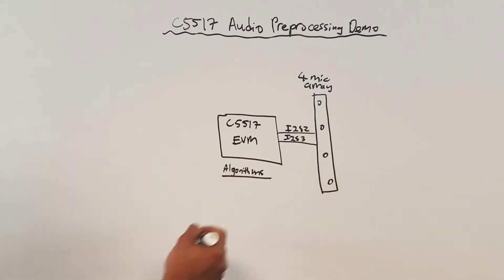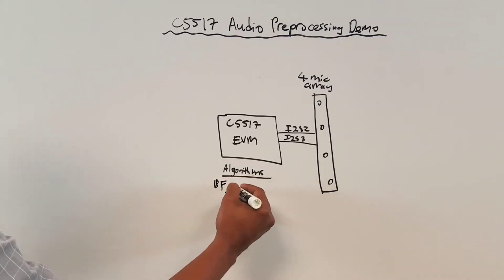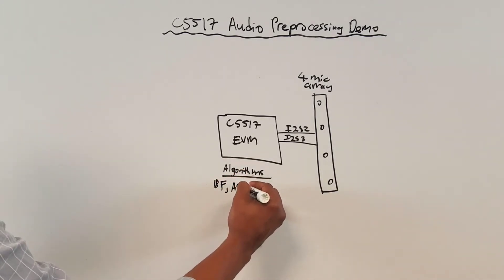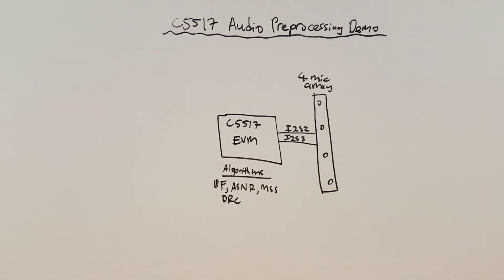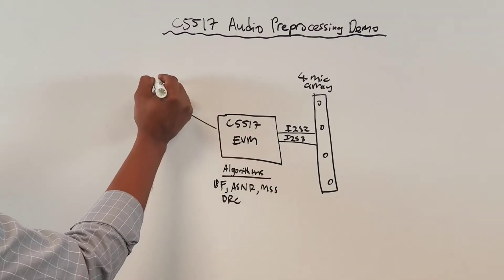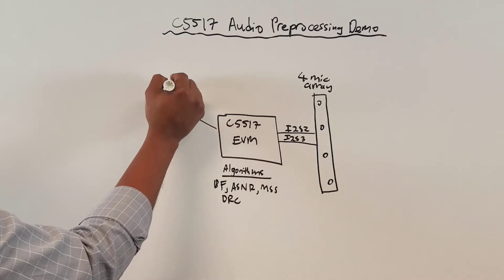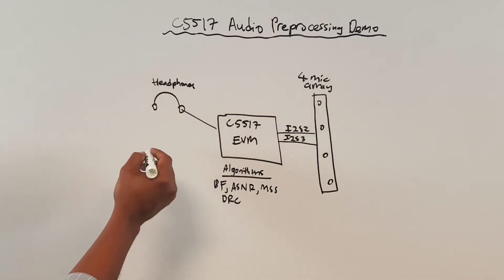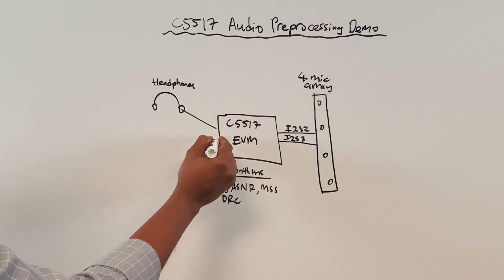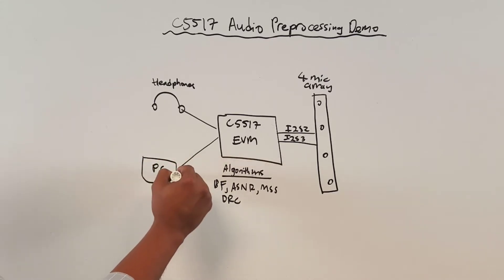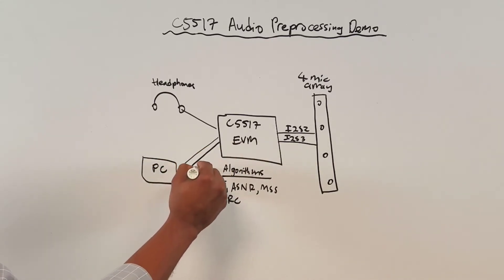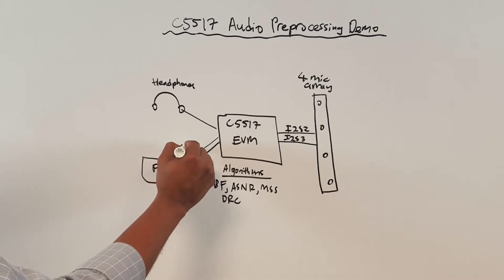There is a beam former, an adaptive spectral noise reduction algorithm, a multi-source selection algorithm, and a dynamic range control algorithm. The output of the processed audio is sent via a headphone jack to the user, so that the user can evaluate the quality of the audio processing.